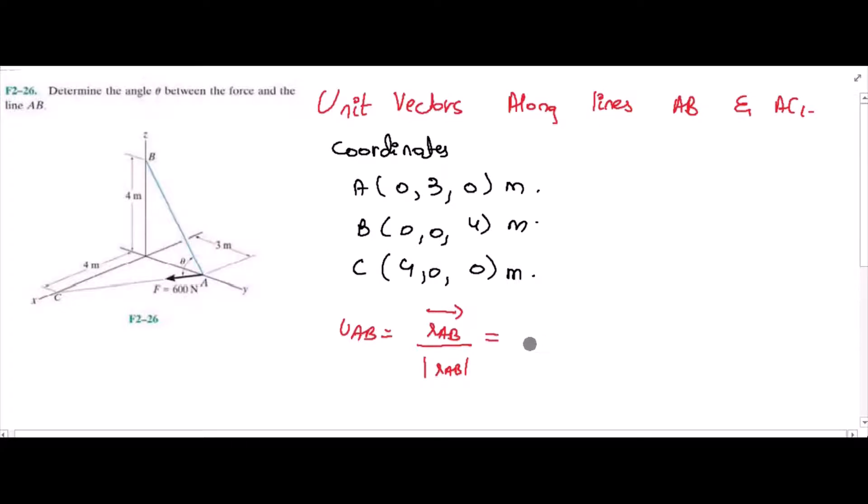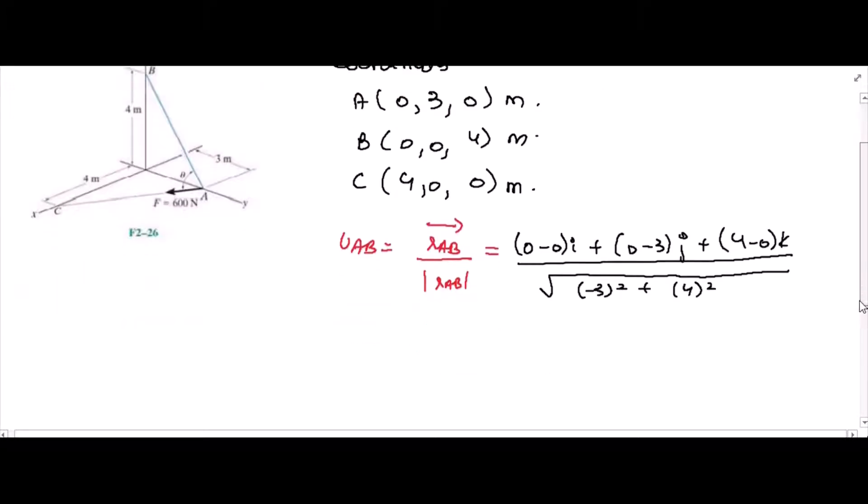For the position vector, we have to subtract the coordinates of point B with the coordinates of point A. So, we have 0-0i plus 0-3j plus 4-0k divided by square root of negative 3 squared plus 4 squared.